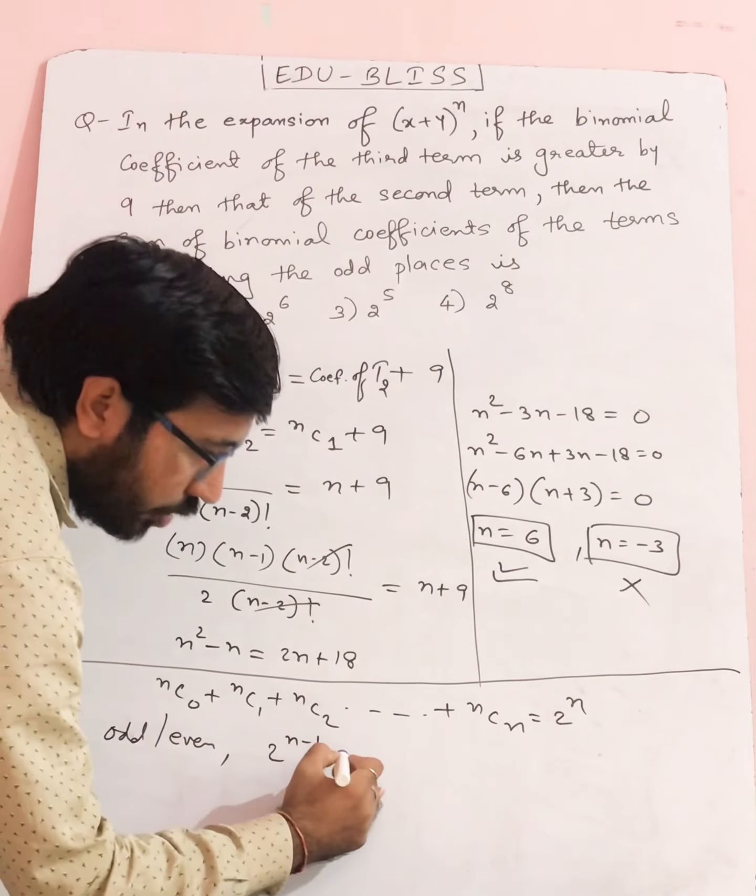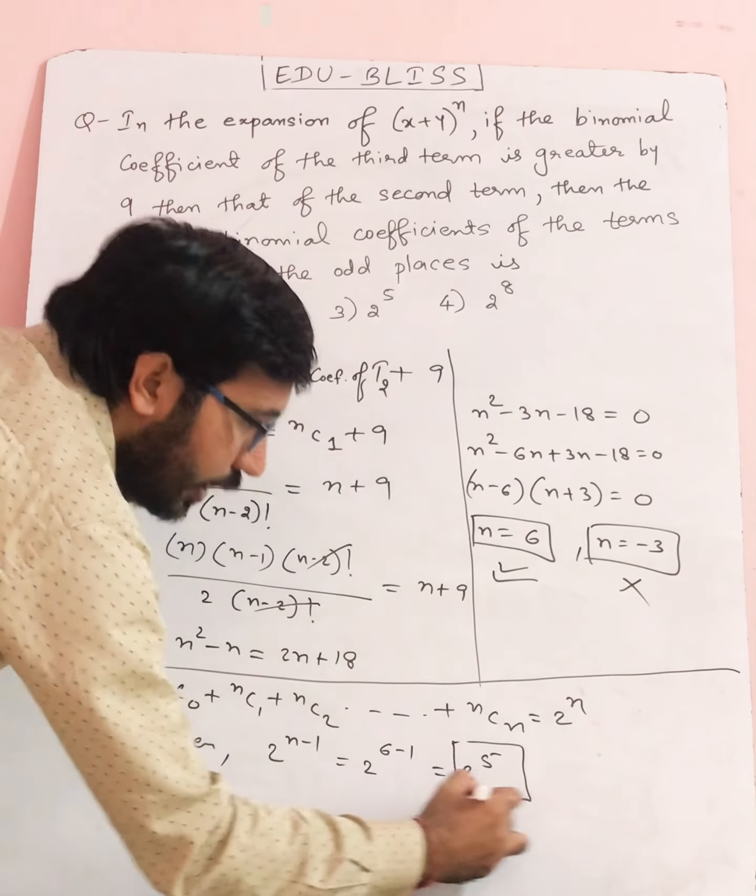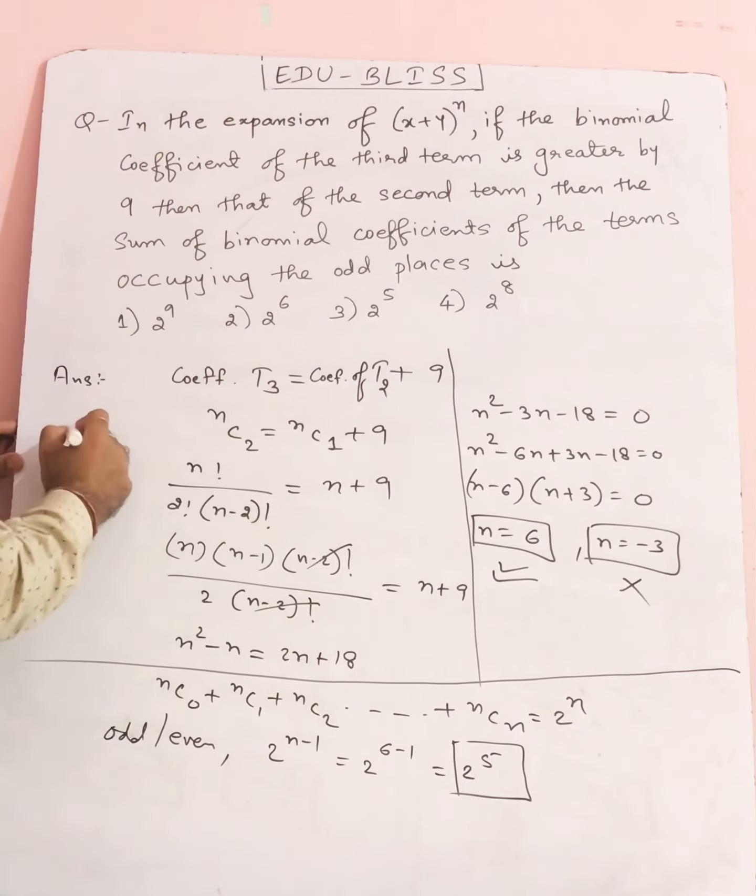So your final answer is 2^(6-1), which is 2^5. 2^5 means the third option is the correct answer. Got it? Write it down.